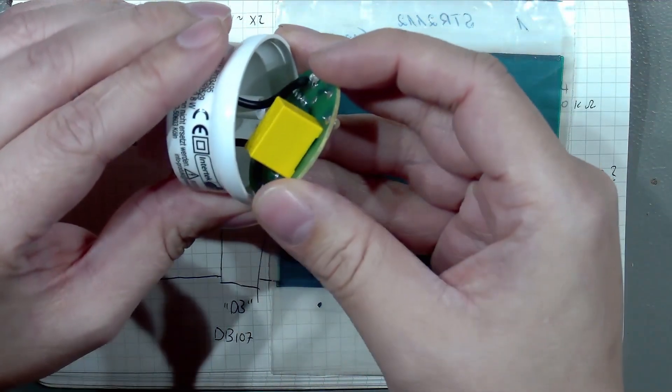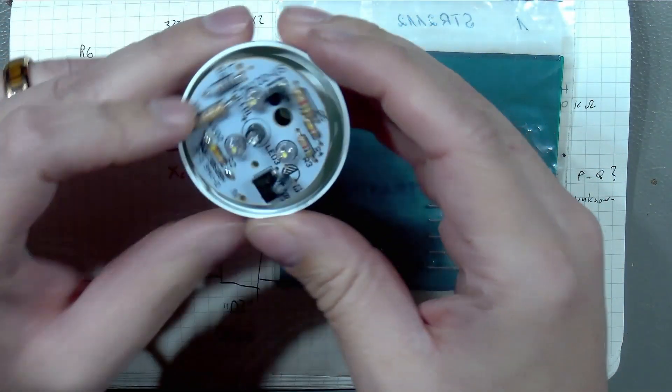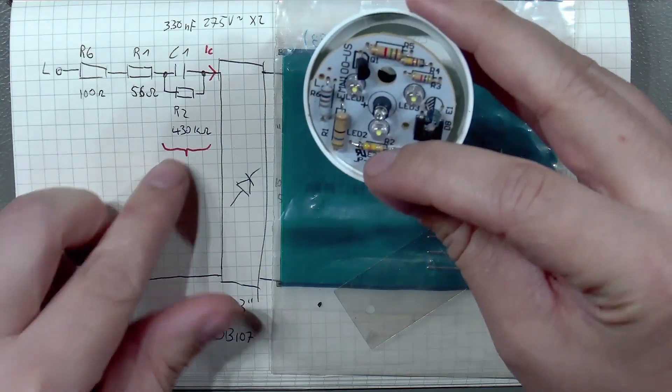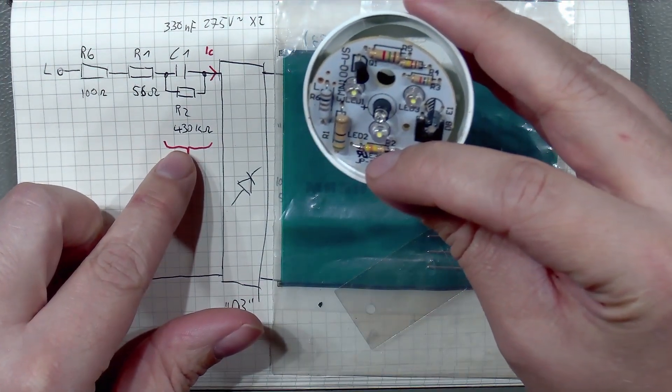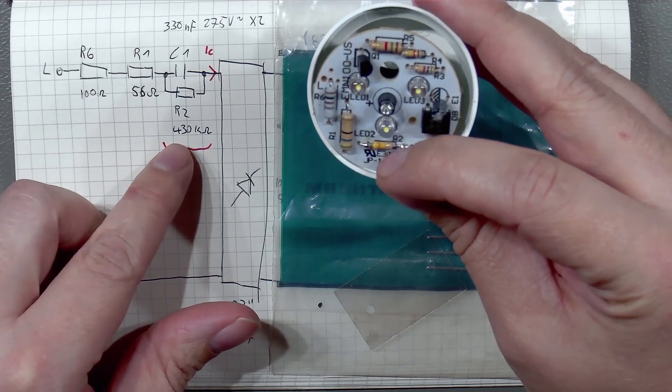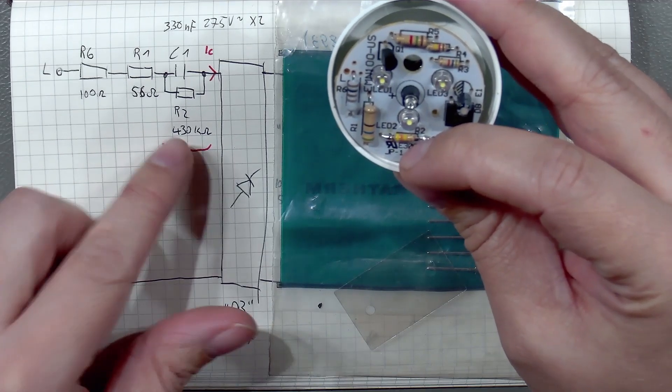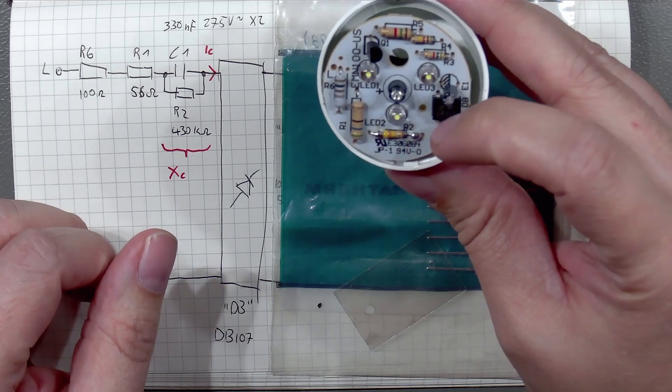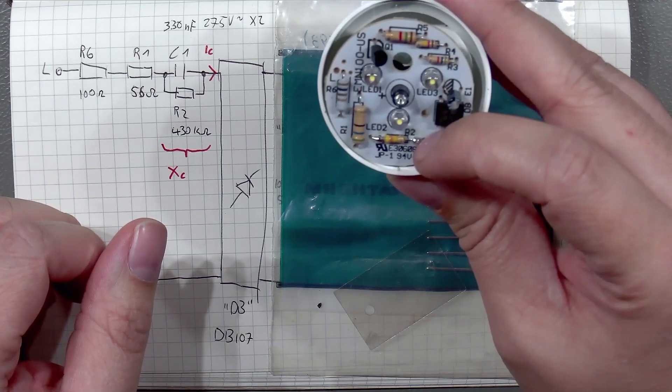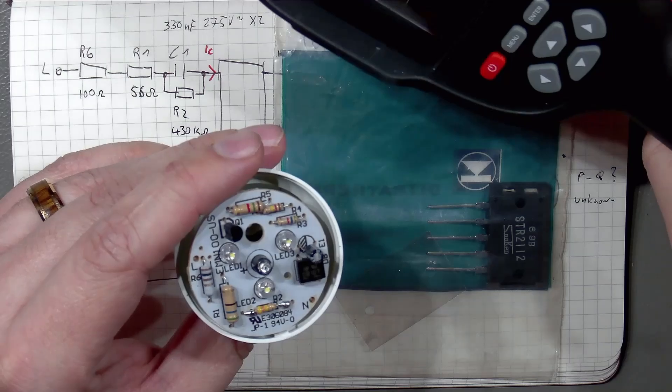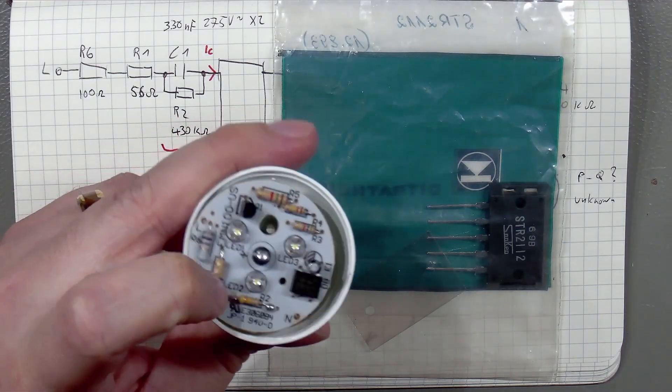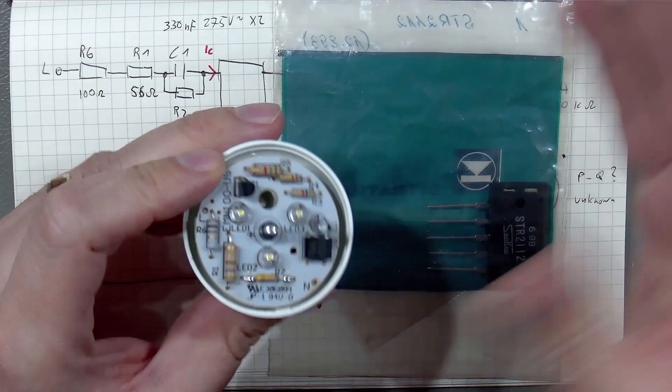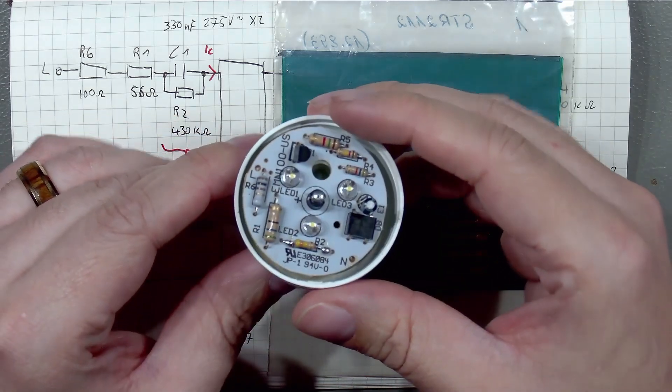It has a discharge resistor which is surprisingly small with 430 kiloohms, also a kind of strange value, but we don't want to complain about that. But I noticed using my thermal camera that this resistor is actually getting a bit warm, not hot but visually warm compared to the other parts.